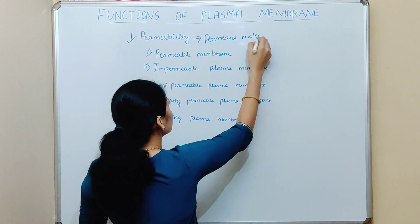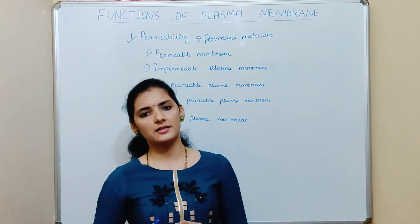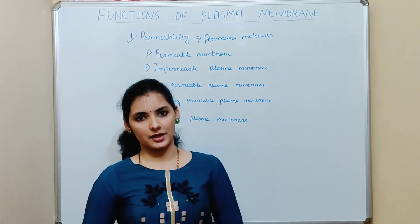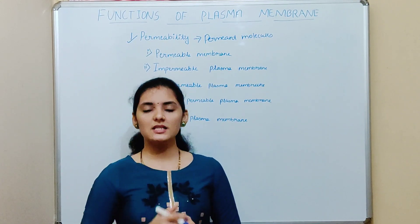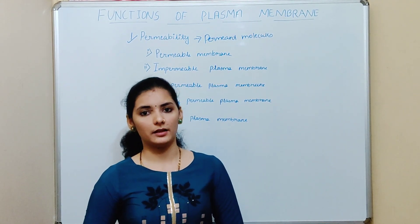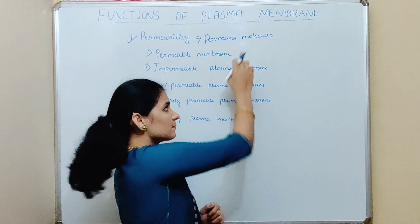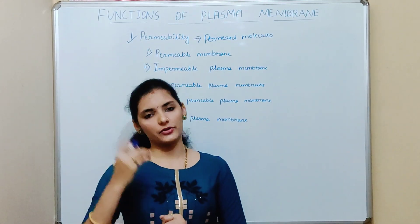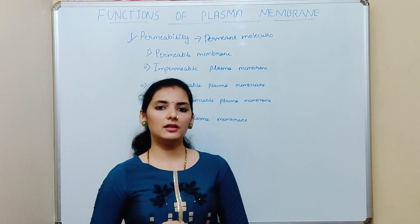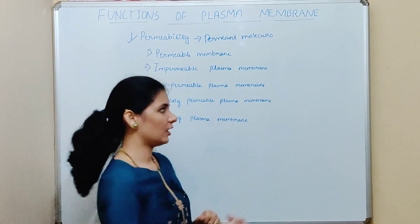These permeate molecules can be gas, water, nutrients, carbohydrates, proteins, ions, minerals, etc. However, all these permeate molecules cannot easily pass through the plasma membrane. There are many factors which determine the exchange of these permeate molecules across the plasma membrane. We'll now discuss the main three factors which determine the exchange of the permeate molecule.